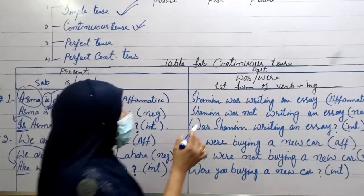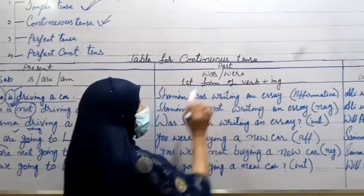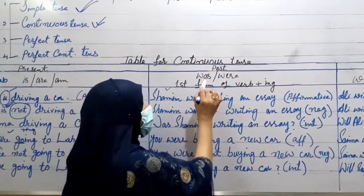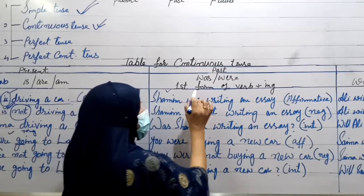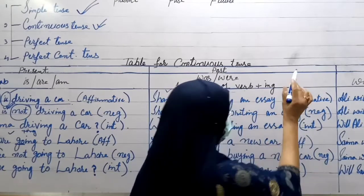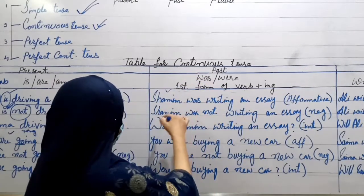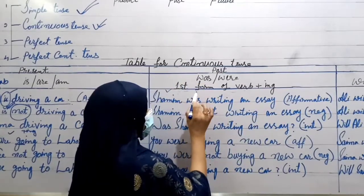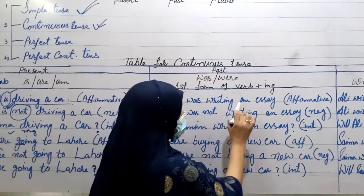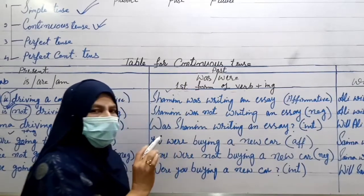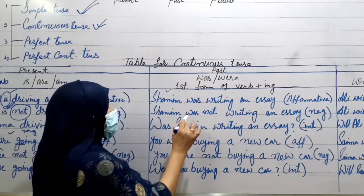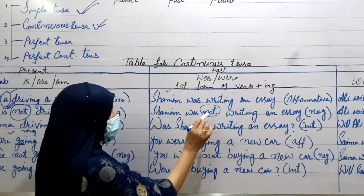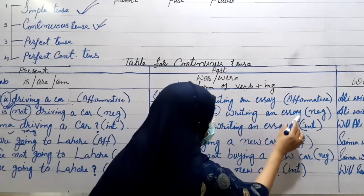Let's move towards the next tense — past continuous tense. Look at the structure: subject, then auxiliary verb 'was' or 'were', then the first form of the verb with I-N-G, then object. Example 1: 'Shamim was writing an essay.' Subject, then 'was', then first form of verb with I-N-G, then object. This is affirmative. For negative, put 'not' between the helping verb and the main verb: 'Shamim was not writing an essay.'